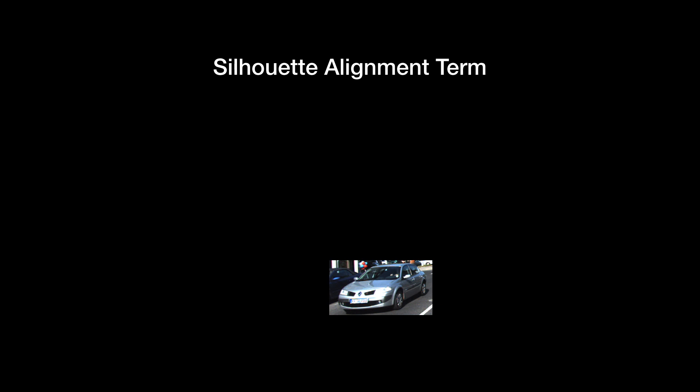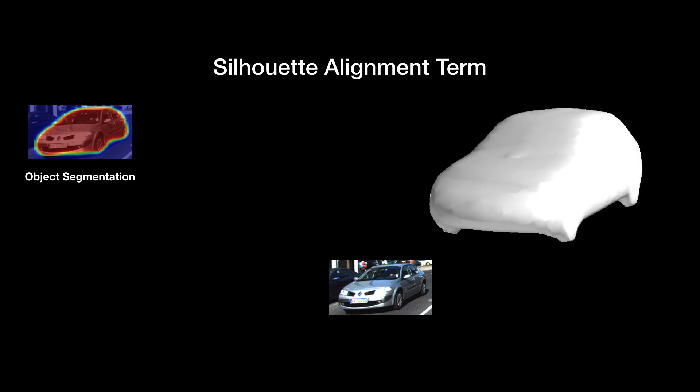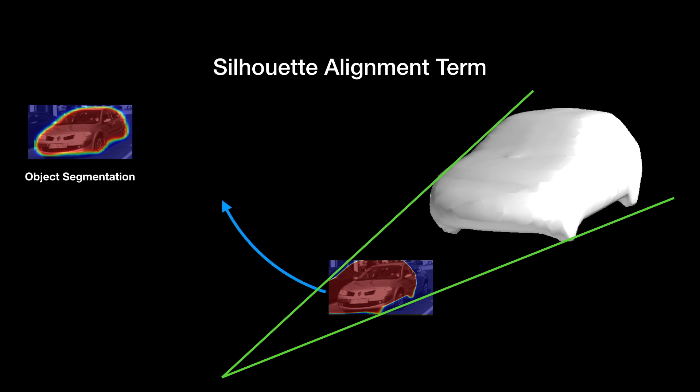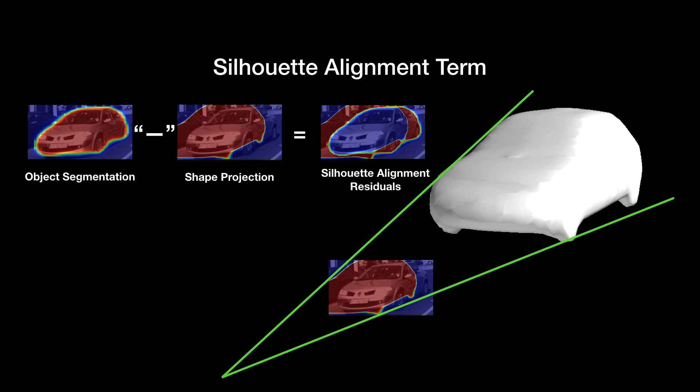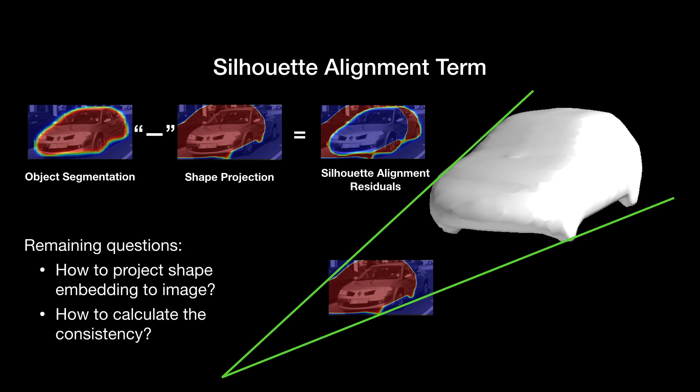To define the silhouette alignment term, we start from the input image. First, an object silhouette can be obtained from the input segmentation mask. Secondly, based on the current object pose and shape, the object can be projected to the image, giving us another silhouette. If the pose and shape are accurate, the two silhouettes should nicely overlap. Now we need to answer the questions, how do we formulate the process of projecting the shape model to image, and how to formulate the consistency between the silhouettes.